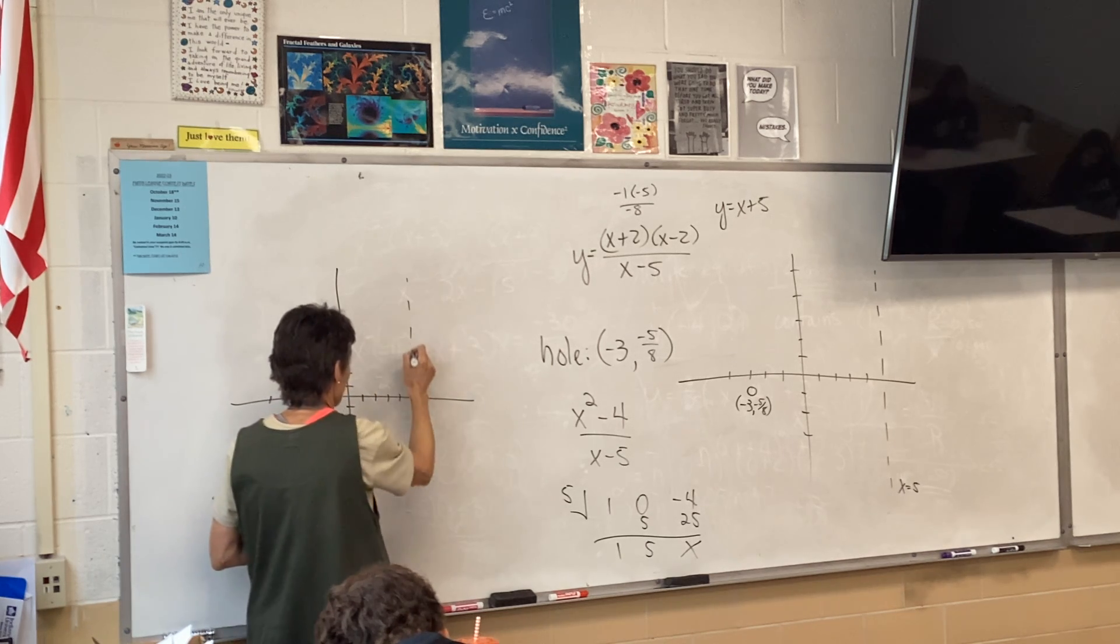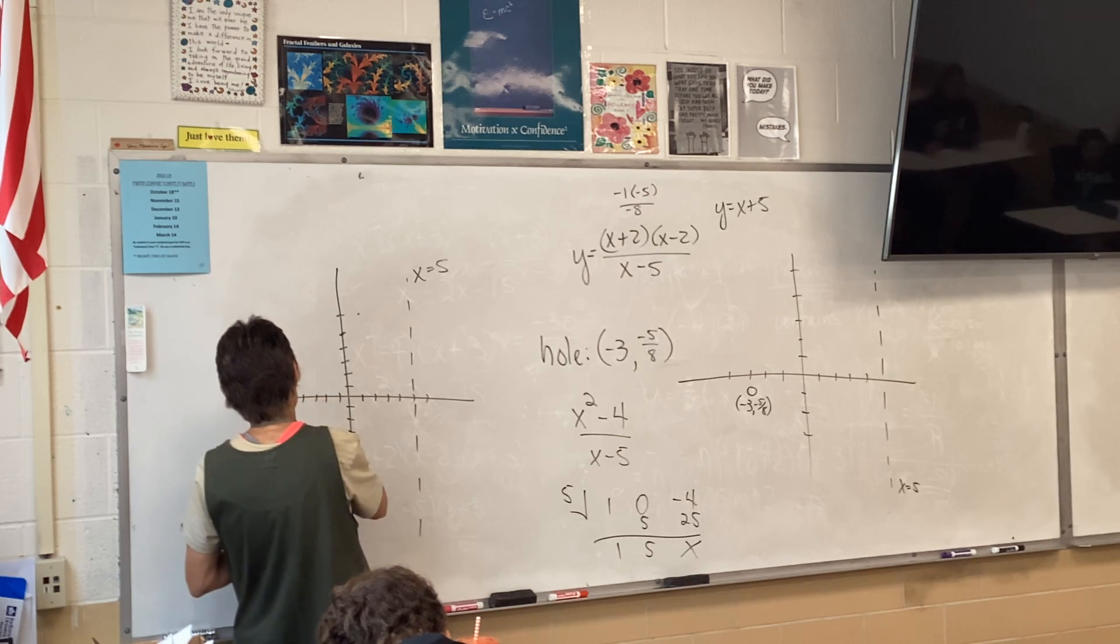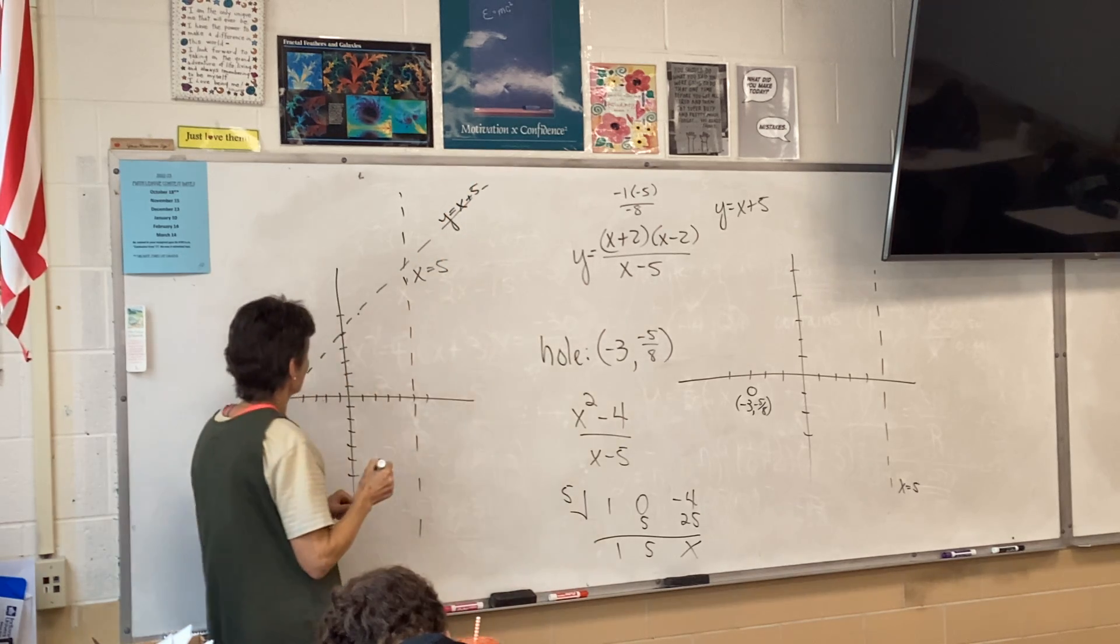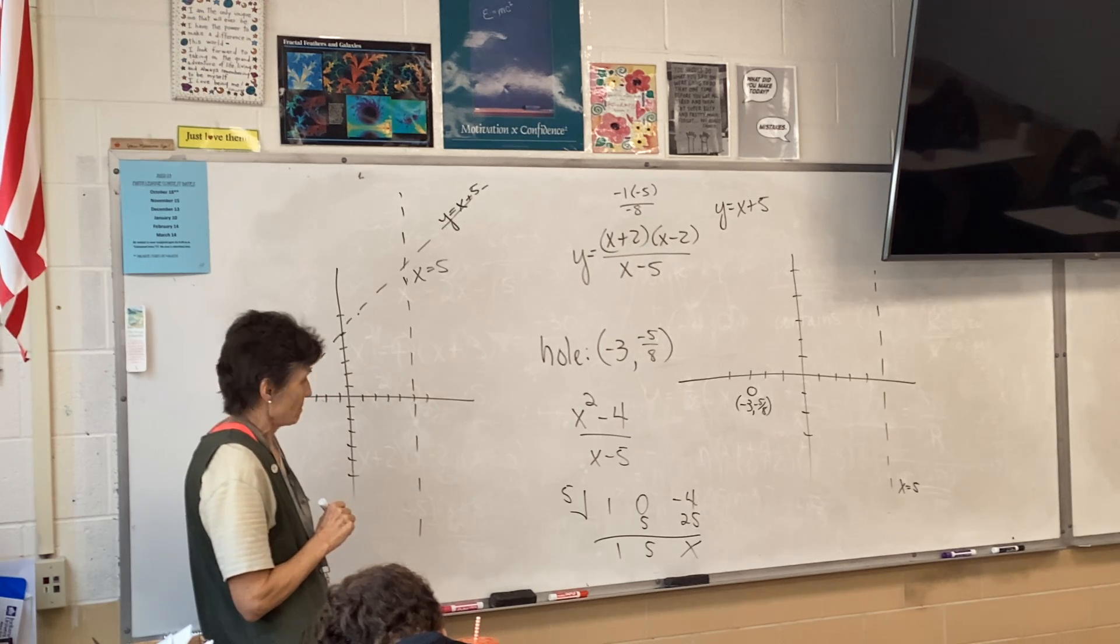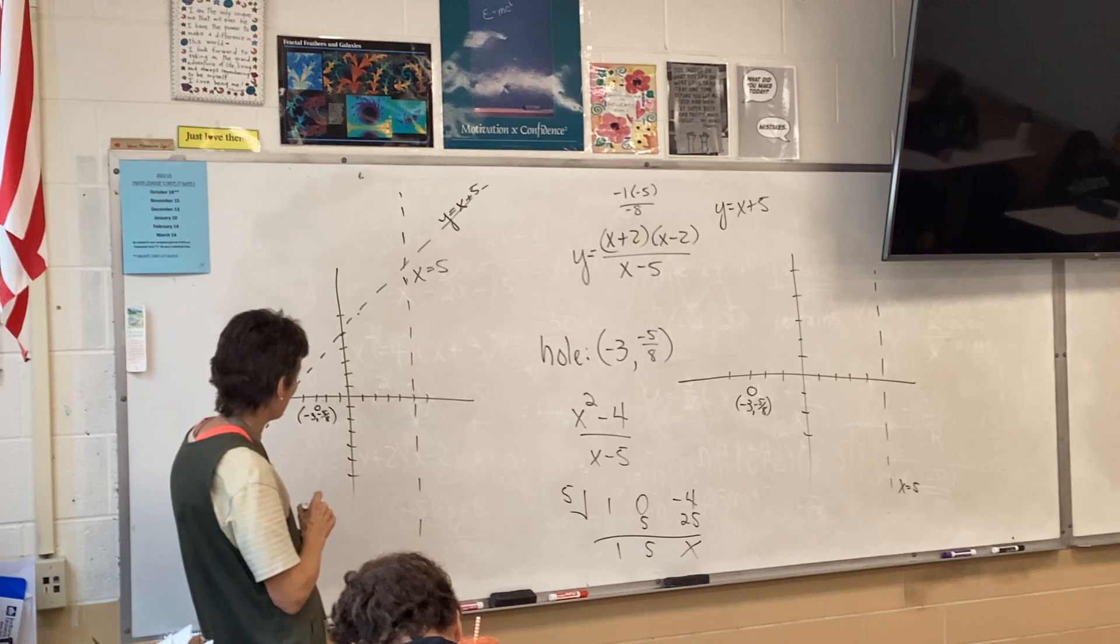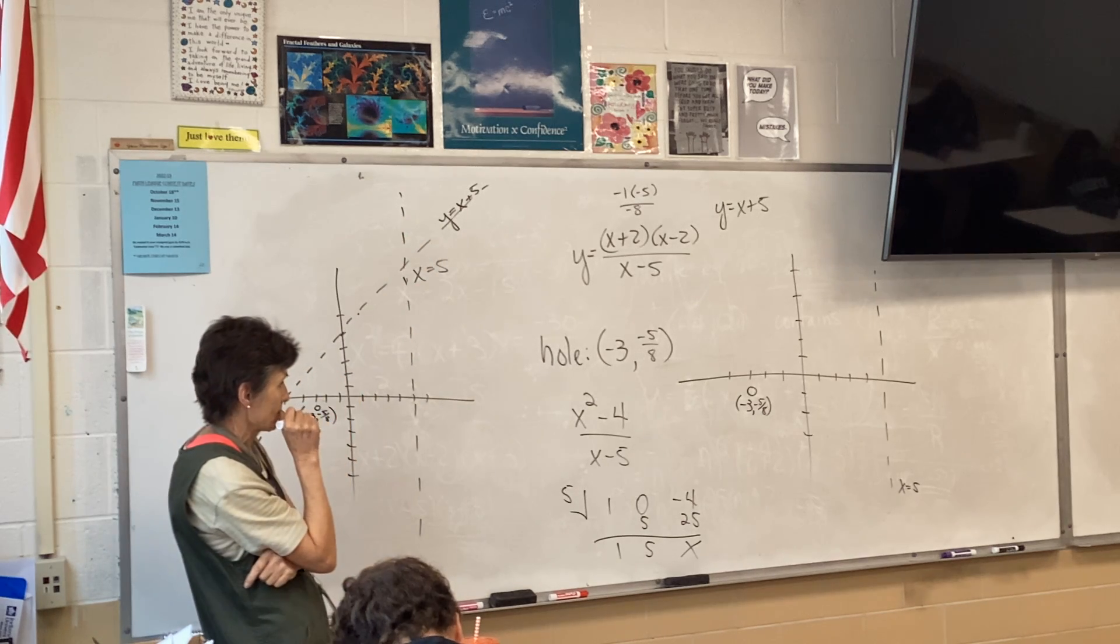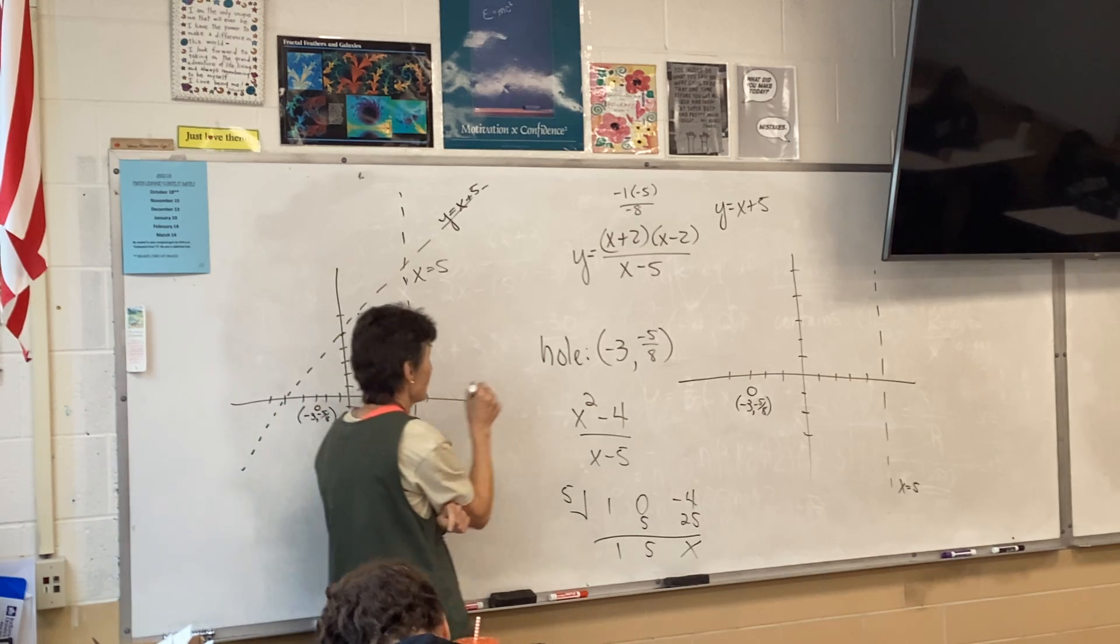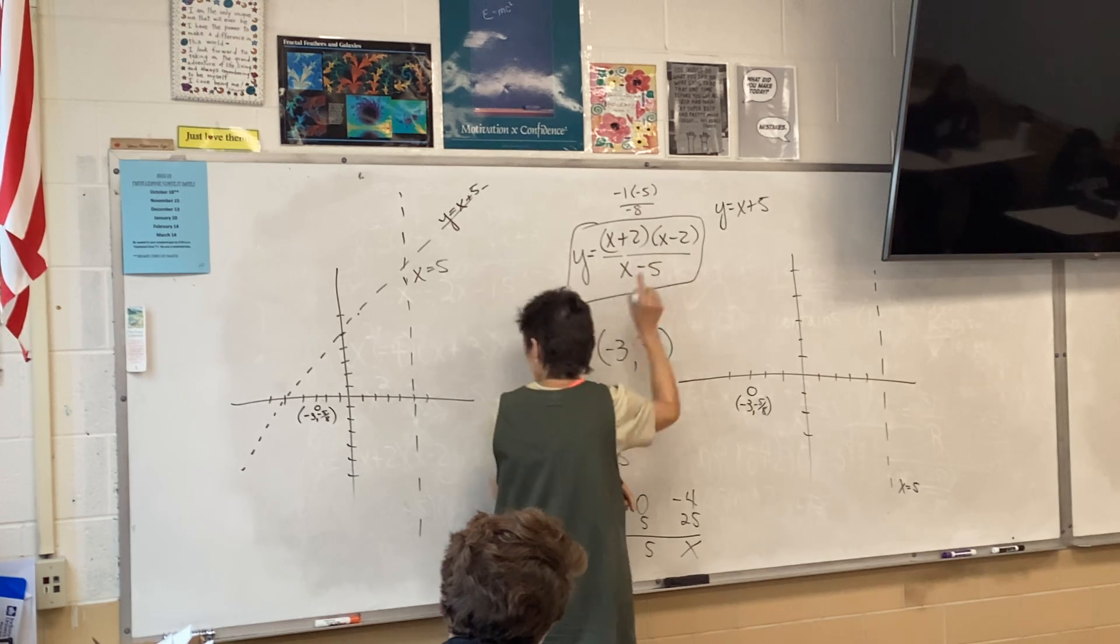So here's my border, my end behavior asymptote, y equals x plus 5. That's supposed to be a straight line. So this is what we've got so far. We got our hole in there, we have our end behavior asymptote, we have our vertical asymptote. What else can I put in my picture? I need my intercepts. It's really obvious that my x-intercepts are at negative 2 and 2.